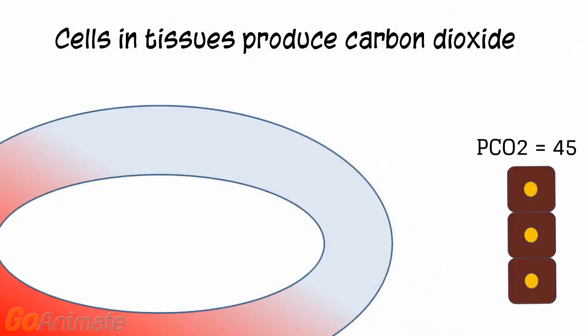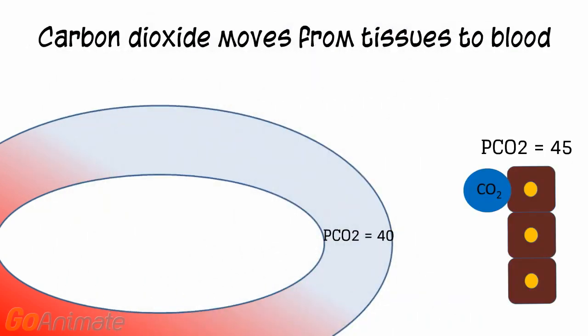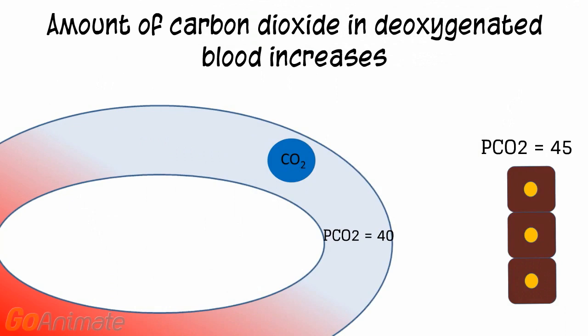The tissues produce carbon dioxide, and the tissue PCO2 is 45 mmHg. The PCO2 of oxygenated blood entering the tissues is 40 mmHg, which is lower than the tissue PCO2 of 45. Carbon dioxide follows its partial pressure gradient and diffuses into the blood, causing the blood PCO2 to rise to 45 mmHg.